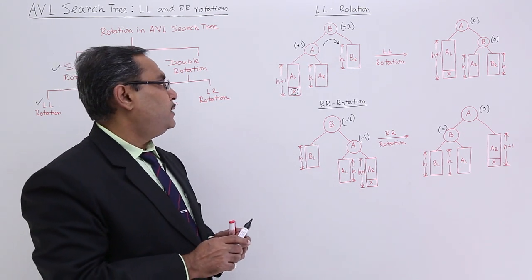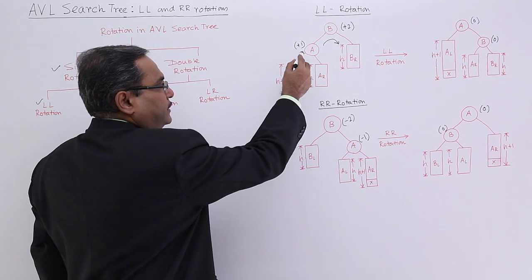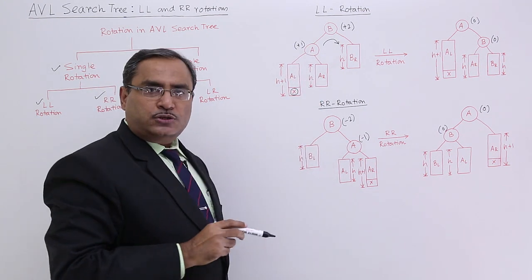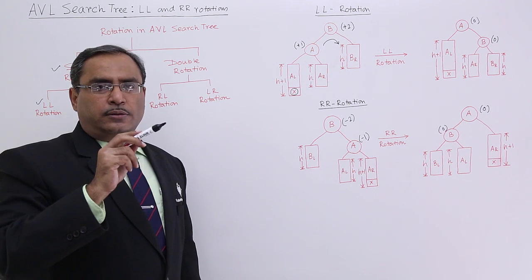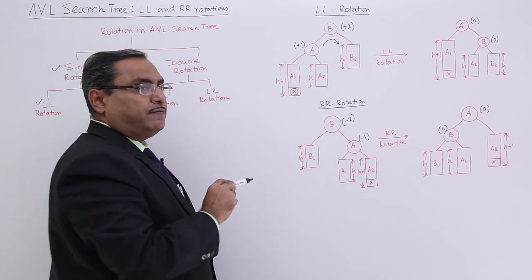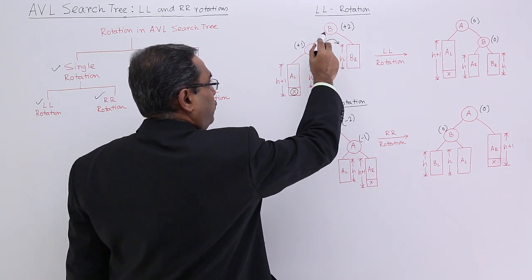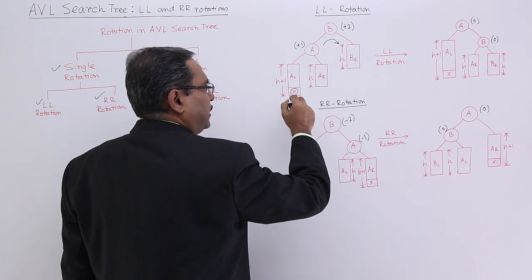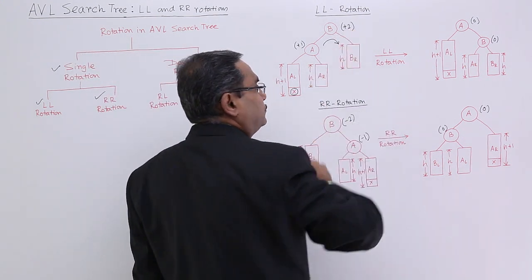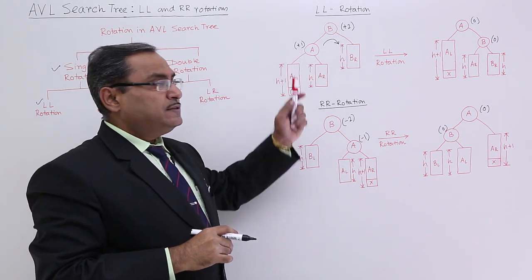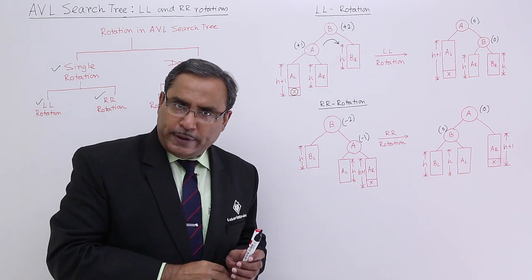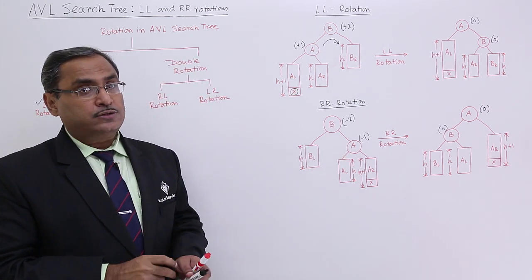The height has got changed to H plus 1. Let me calculate the balance factors: it is 1 plus H plus 1, so H plus 2, and it is 1 plus H, so H plus 1. So H plus 2 minus H plus 1 gives plus 1 as the balance factor for this node. And for the upper node: 1 plus 1 plus H plus 1 gives H plus 3, and 1 plus H. Subtracting, you are left with plus 2. So its balance factor is plus 2 and the child's balance factor is plus 1. Since the balance factor has become plus 2, it requires one rotation.